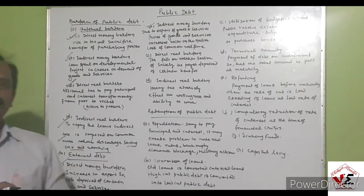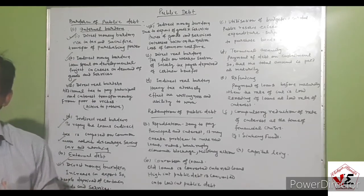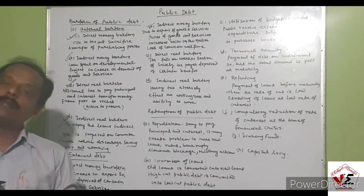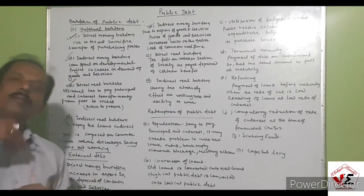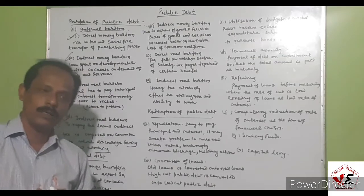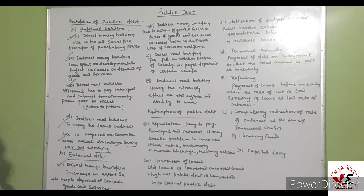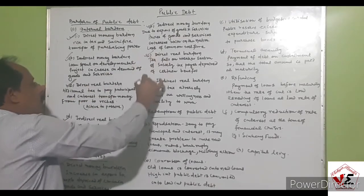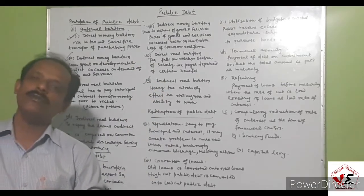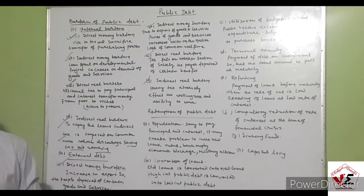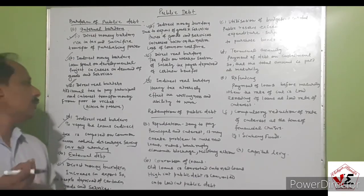For the direct real burden of external debt: taxes fall on the weaker section of society, who are deprived of certain benefits. As the government imposes taxes, the benefit of their purchasing power goes into the pocket of the government for export repayment. For the indirect real burden: heavy taxes adversely affect the willingness and ability of the people to work, to a large extent, due to the imposition of tax.